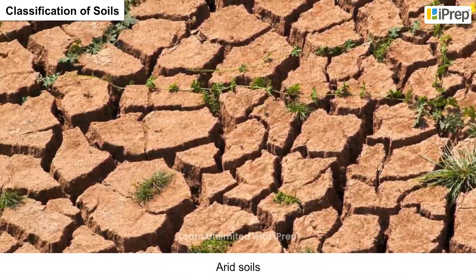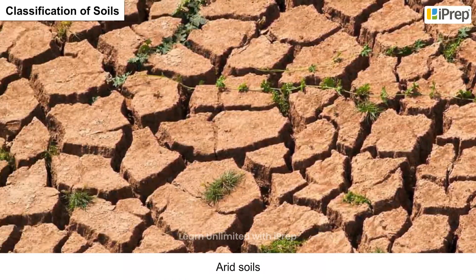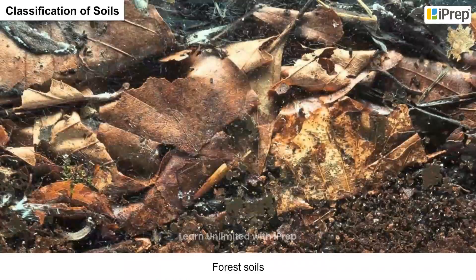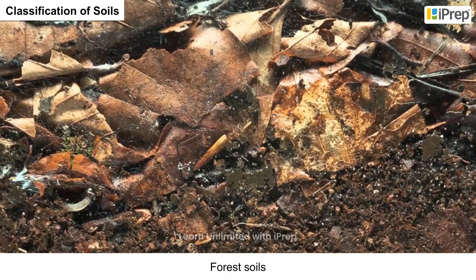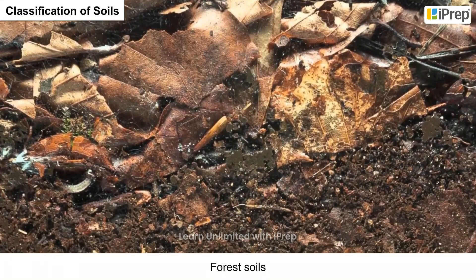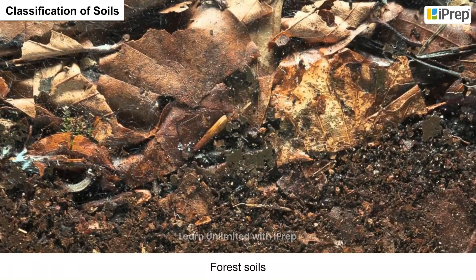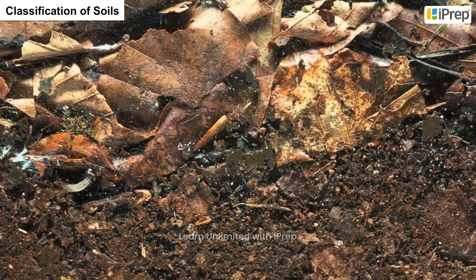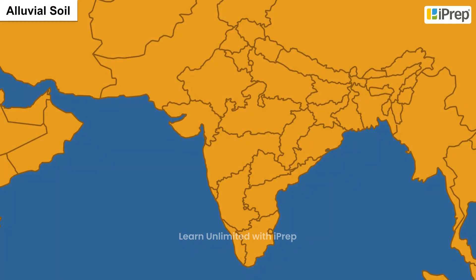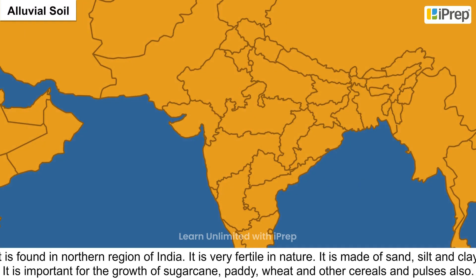The six categories are: one, alluvial soils; two, black soil; three, red and yellow soils; four, laterite soil; five, arid soils; and six, forest soils. Let us know each of them in brief.